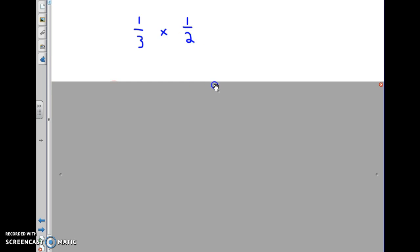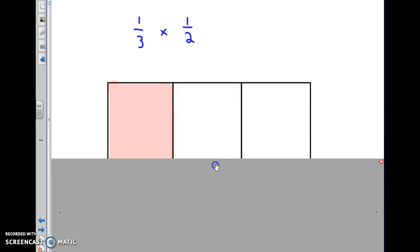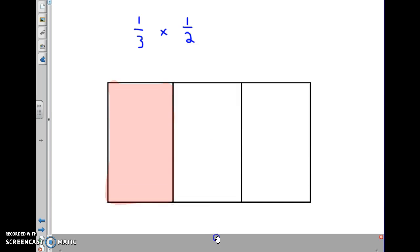So, how we're going to start working with this is with a visual representation. I started off with showing you what 1 third might look like. This is 1 third because there's three equal parts, and one of those parts is shaded. So, this is one out of the three. 1 third.